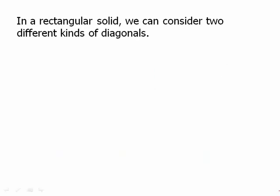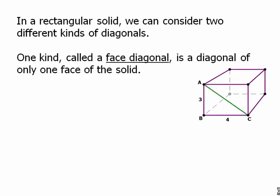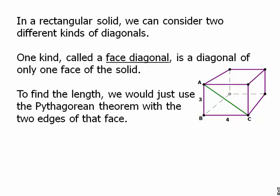In a rectangular solid, we can consider two different kinds of diagonals. One kind called a face diagonal is a diagonal of only one face of the solid. It's like we're ignoring the rest of the solid, and we're just looking at that single rectangle, the diagonal in that single rectangle. To find that length, we just use the Pythagorean theorem with the two edges of that face.